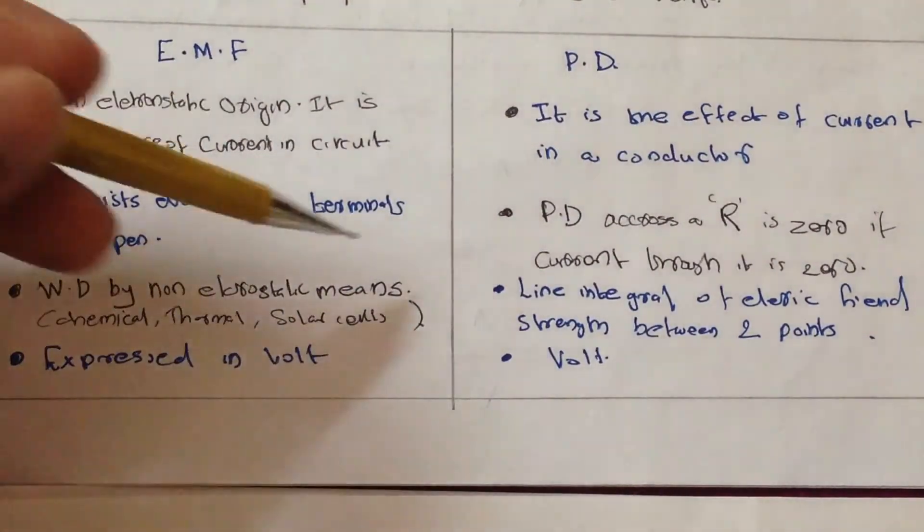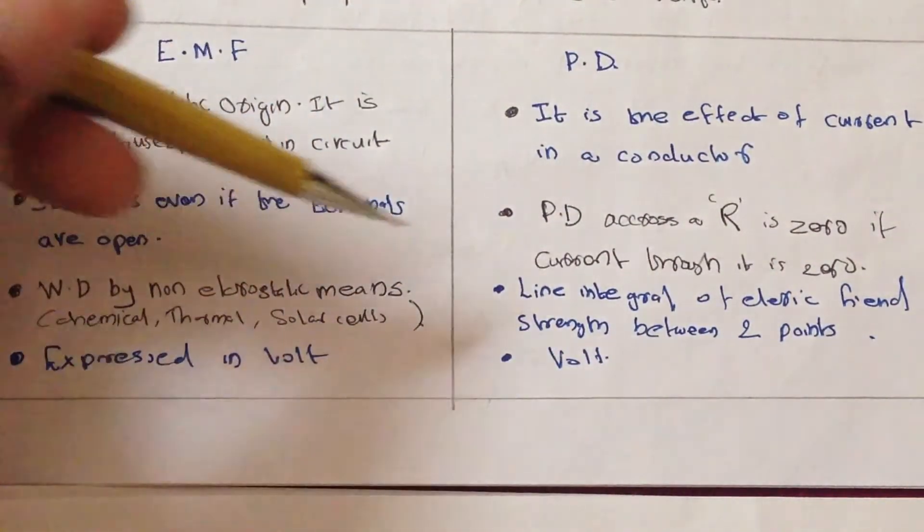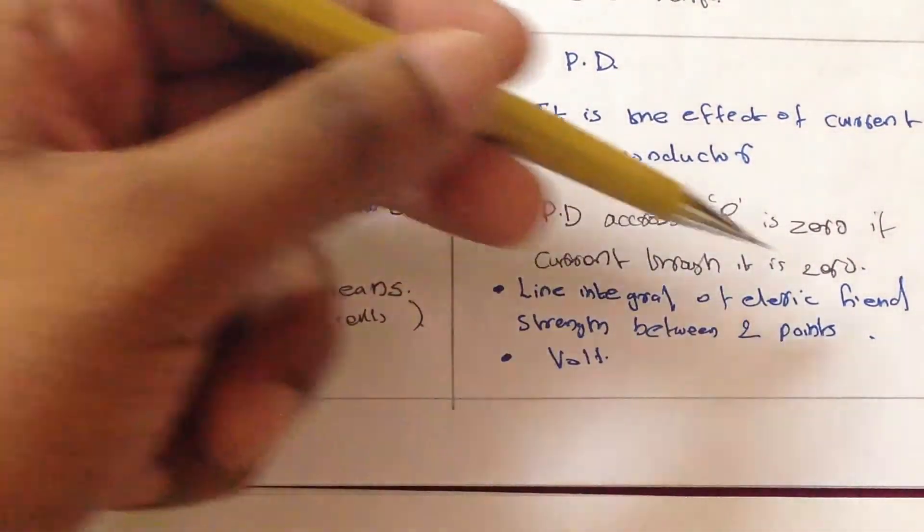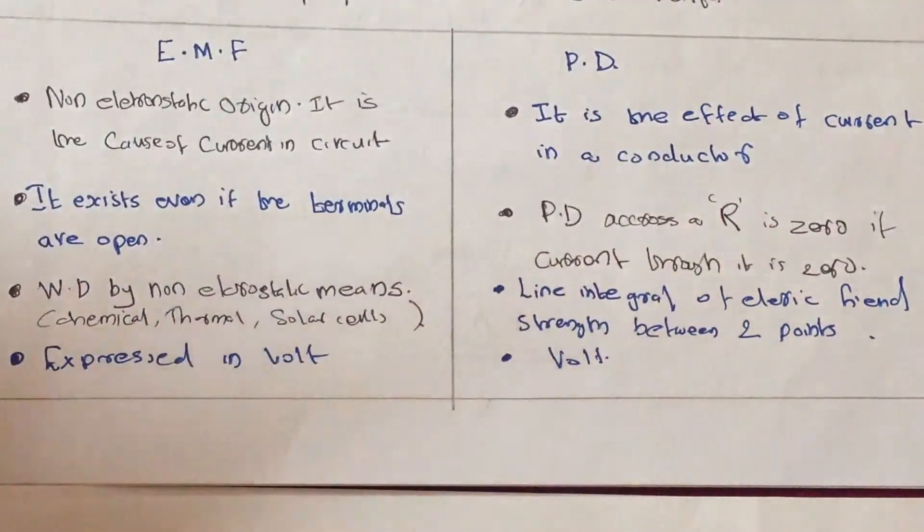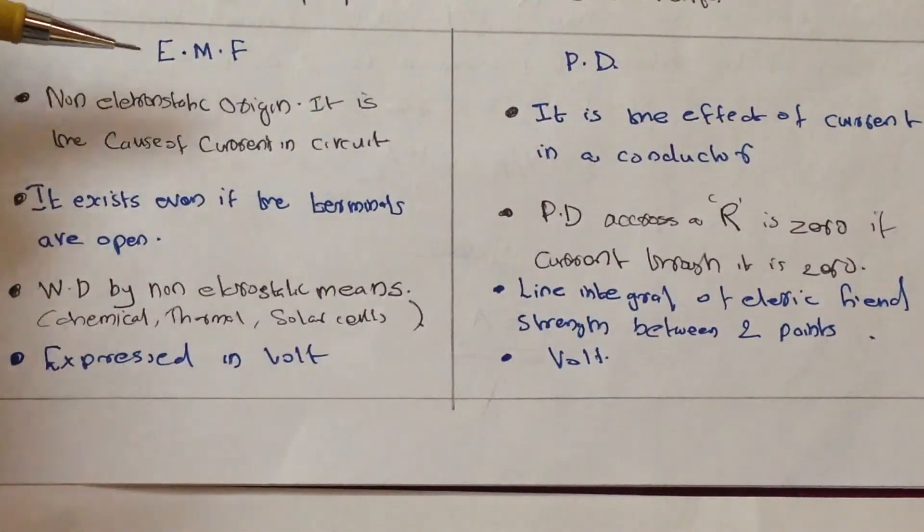Line integral of electrical field strength between two points, same as that. And EMF is expressed in volt and potential difference is also expressed in volt.